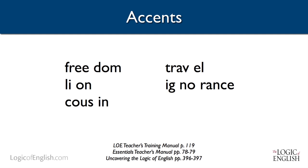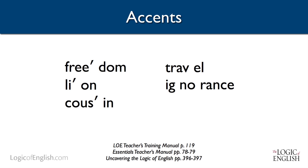The first word is 'freedom.' Notice you hear the 'e' very distinctly, and in the second syllable 'dum' it sounds like the schwa sound 'uh.' So 'free' is the accented syllable. Then we have 'lion' — you can hear 'lie' is accented and the 'i' very clearly. 'Cousin' — 'cuz' is actually the accented syllable. How about 'travel'? 'Trav' is the accented syllable.